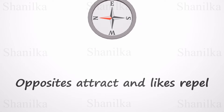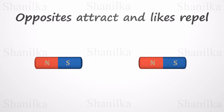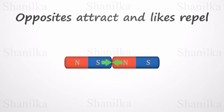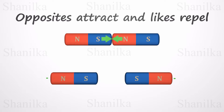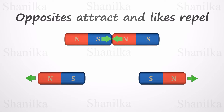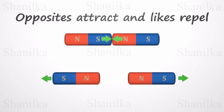Another interesting property of a magnet is that opposites attract and likes repel. If you have two bar magnets with their ends marked north and south, then one magnet's north end will attract the other's south end. On the other hand, the south end of one magnet will repel the south end of the other, and also north will repel the north.